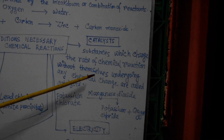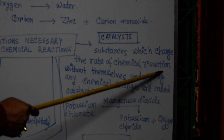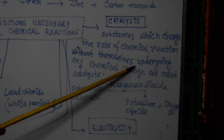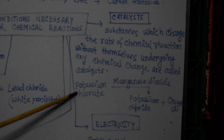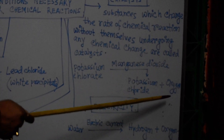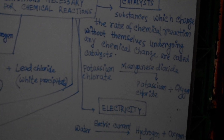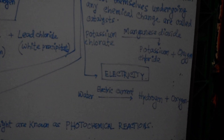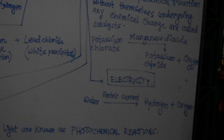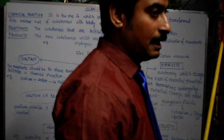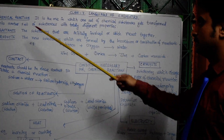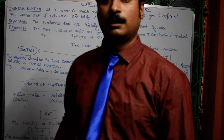Another new term is catalyst — it changes the rate of chemical reactions without itself undergoing any chemical change. We cited the example of potassium chlorate breaking down to produce potassium chloride and oxygen, with manganese dioxide as the catalyst. Lastly, electricity is required for the decomposition of water into hydrogen and oxygen. So we have learned the language of chemistry — Chapter 6 — covering chemical reactions, reactants, products, and all the conditions. Stay tuned.